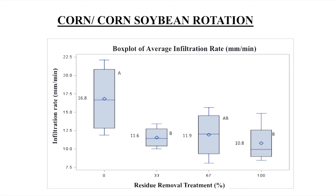In the corn-soybean rotations, with corn one year and soybean the next, we looked at both phases. The only things we saw in the physical properties were the infiltration rate on the zero percent removals was 17 millimeters per second — a little bit slower than for continuous corn — and the 100 percent removal was about 11 millimeters per second, a little bit faster. Remember, there is some residue left after the soybean crop, which helps protect the surface and provide organic matter to bind soil particles together.